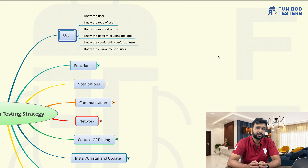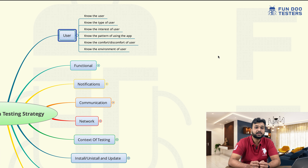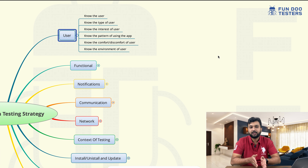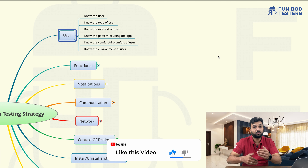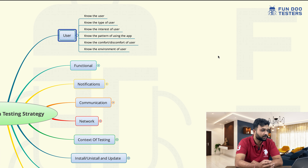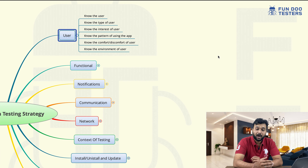Let's start with the user. The first point is the user. Whenever we are going to test any application, we need to understand the context of the application. Let's say we are working on a different domain — e-commerce domain, healthcare domain, or a chatting application. Each application has a different context, so we have to keep in mind for which domain we are going to work. Based on that, we have to know the user, the type of user, the interest of the user, the environment of the user, and how the user is going to use the application. We need to understand the pattern.